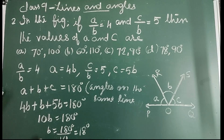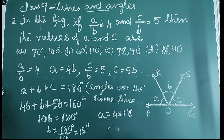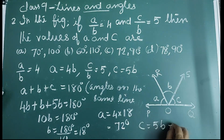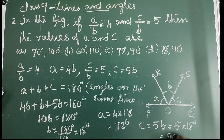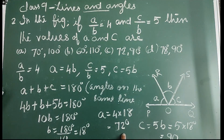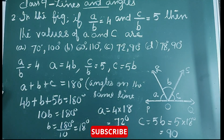Now, B = 18°. Therefore, A = 4 × 18 = 72° and C = 5B = 5 × 18 = 90°. So the correct option is option C, that is A = 72° and C = 90°.